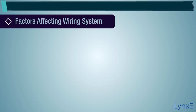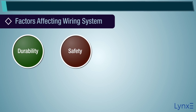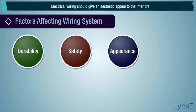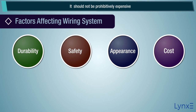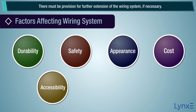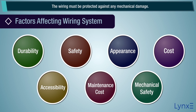Factors Affecting Wiring System: Durability — the type of wiring selected should conform to standard specifications so that it is durable without being affected by weather conditions or fumes. Safety — the wiring must provide safety against leakage, shock, and fire hazards. Appearance — electrical wiring should give an aesthetic appeal to the interiors. Cost — it should not be prohibitively expensive. Accessibility — switches and plug points should be easily accessible, with provision for further extension if necessary. Maintenance cost — should be minimum. Mechanical safety — the wiring must be protected against any mechanical damage.